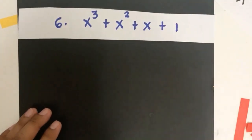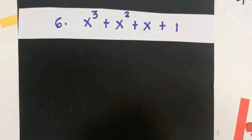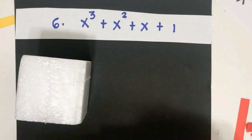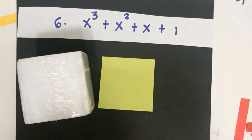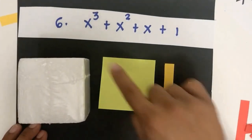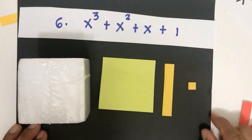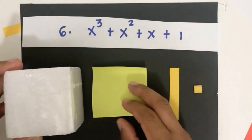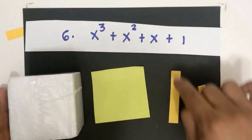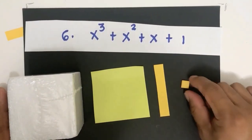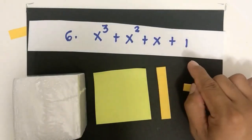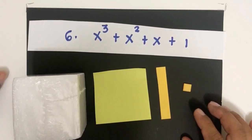For x cubed plus x squared plus x plus 1: is it possible to combine these? No, because x cubed and x squared are very different — one is three-dimensional, the other is flat. x and x squared are also different, and a constant is different from the rest. So x cubed plus x squared plus x plus 1 is already fully simplified.